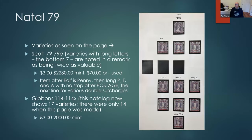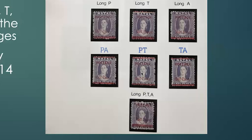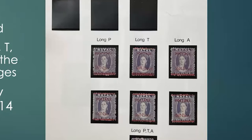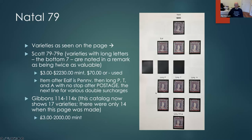Natal — this is a page where I have most of the stamps involved. The stuff down here with the long 'P,' long 'T,' and long 'A' in the word 'POSTAGE' — I'll expand this in a moment. These are not listed in Scott as varieties, just in a note. Gibbons, however, lists them. These are the combinations: P and T, P and A, T and A, and then a stamp that has all three of them long.